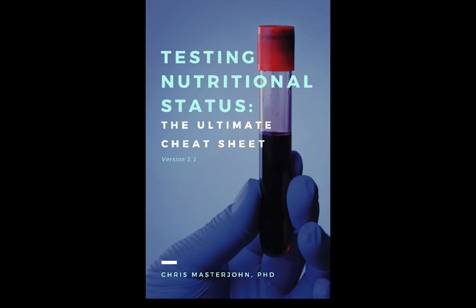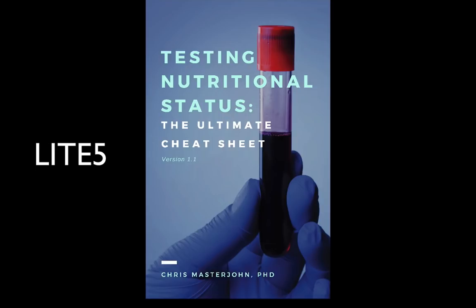This episode is brought to you by Testing Nutritional Status: The Ultimate Cheat Sheet — everything you could ever need to know to optimize your nutrition, all in one place, easier to find and use than ever before. Get your copy at chrismasterjohnphd.com/cheatsheet. Use the code LITE5 — that's all capitals L-I-T-E and the number 5 — to get $5 off.